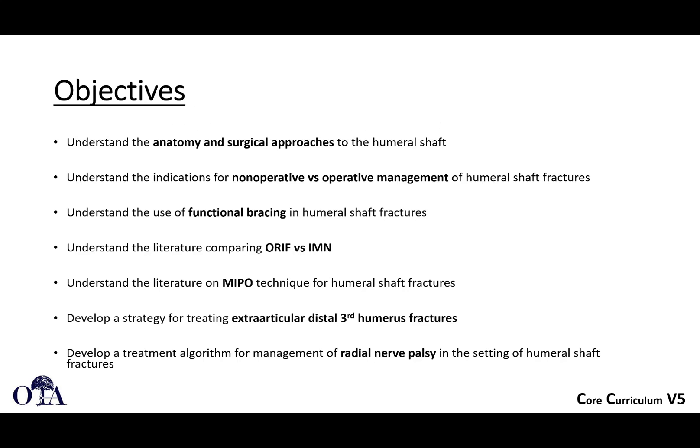Objectives here are going to be to go through the following: understand the anatomy and surgical approaches — we'll talk about a lot of that information in this first video — understand the indications for operative versus non-operative management of humeral shaft fractures, and understand the use of functional bracing. We'll also try to help answer the question of whether to do open reduction internal fixation versus intramedullary nailing and understand the literature.